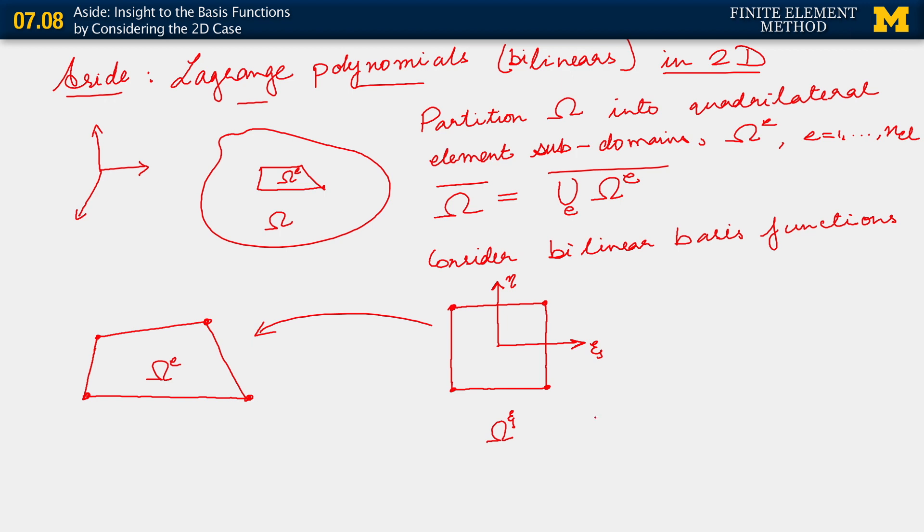The points in the xi eta domain are picked, essentially, as before, accounting however for the fact that it is now a square. So the domain is, again, a bi-unit domain. So that says that these coordinates in terms of xi and eta are minus 1, minus 1; 1, minus 1; 1, 1; and minus 1, 1.